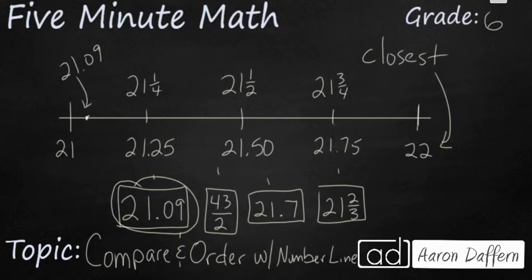Now let's take a look at 21 and seven tenths. Well, here's my 21 and seventy-five hundredths. So that's going to be just a little bit before there, and I'm going to just draw a little arrow here. And we can call this 21 and seven tenths.